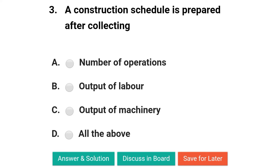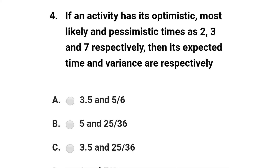Next question: a construction schedule is prepared after collecting — option A: number of operations; option B: output of labor; option C: output of machinery; option D: all of the above. The correct answer is option D: all of the above.